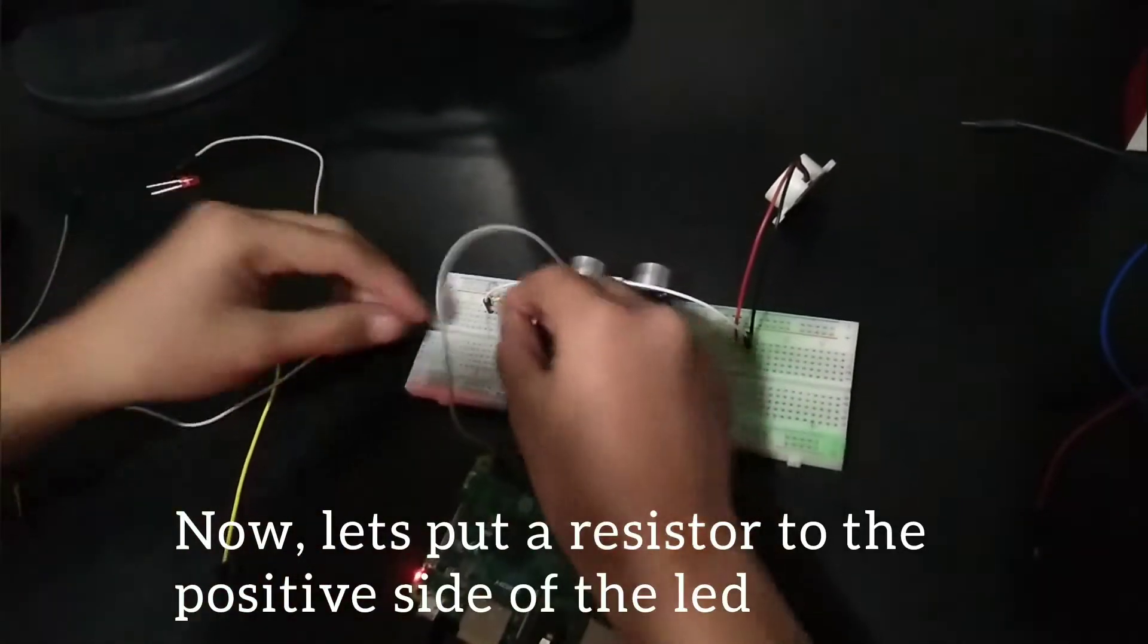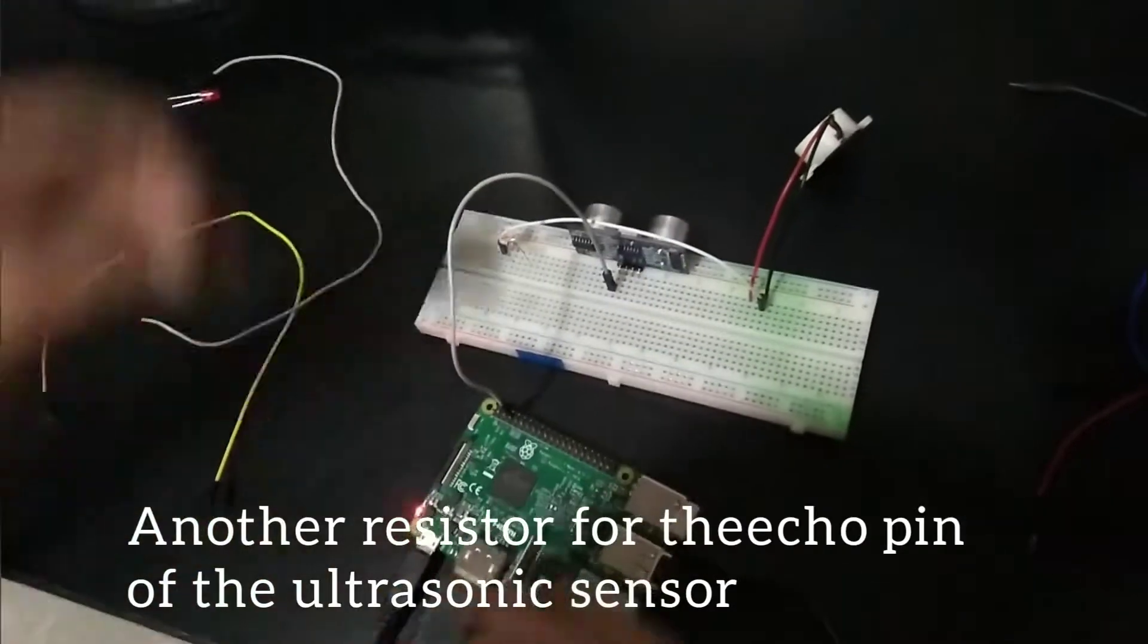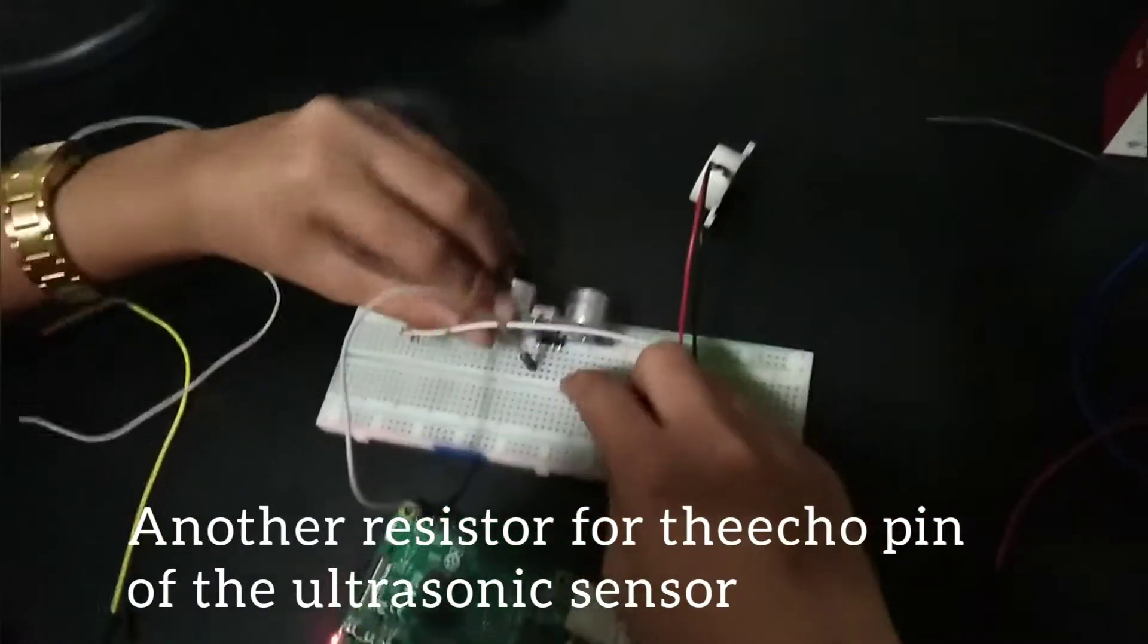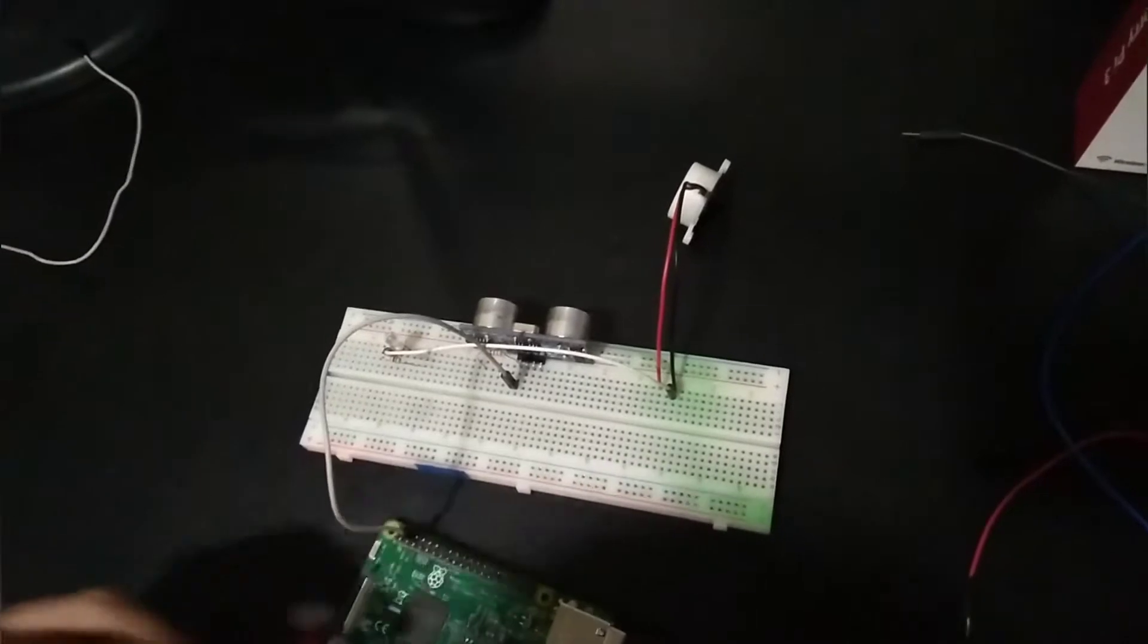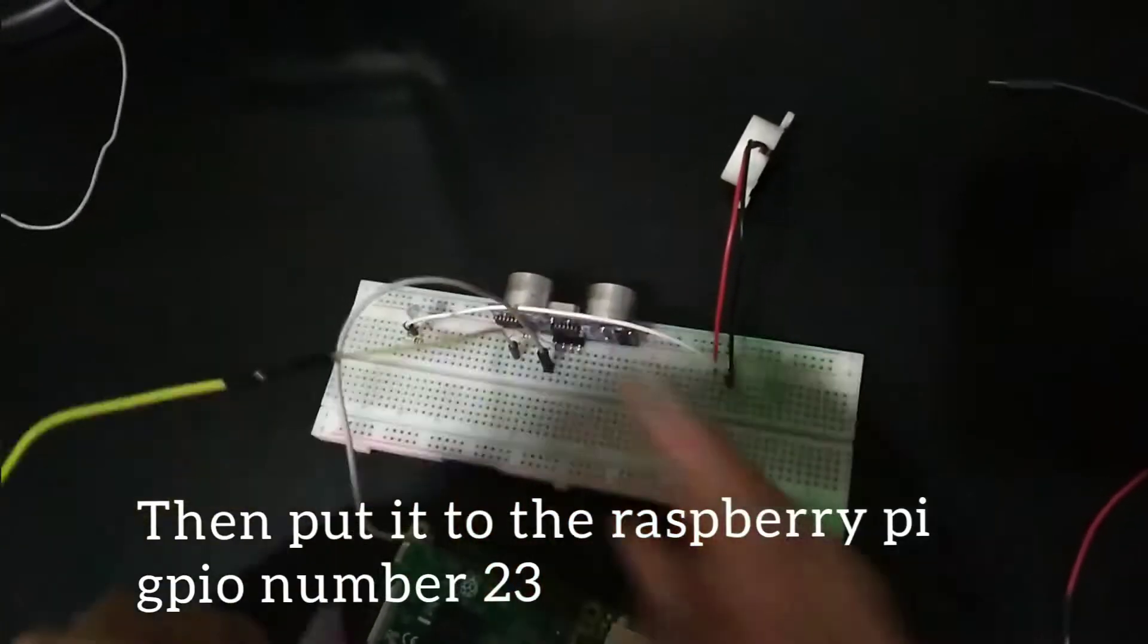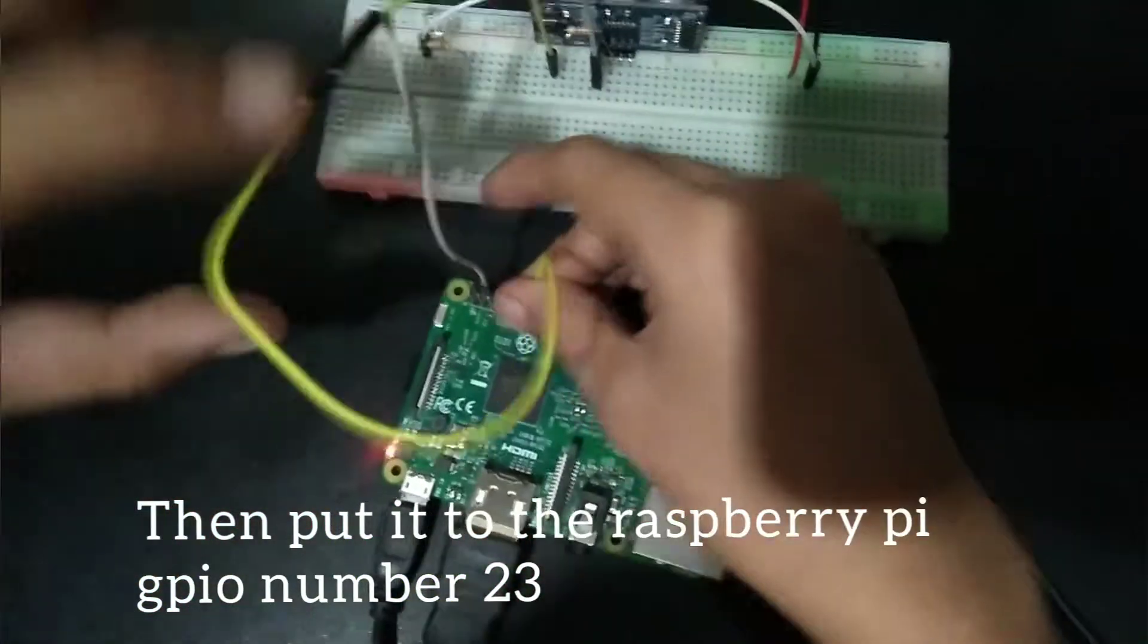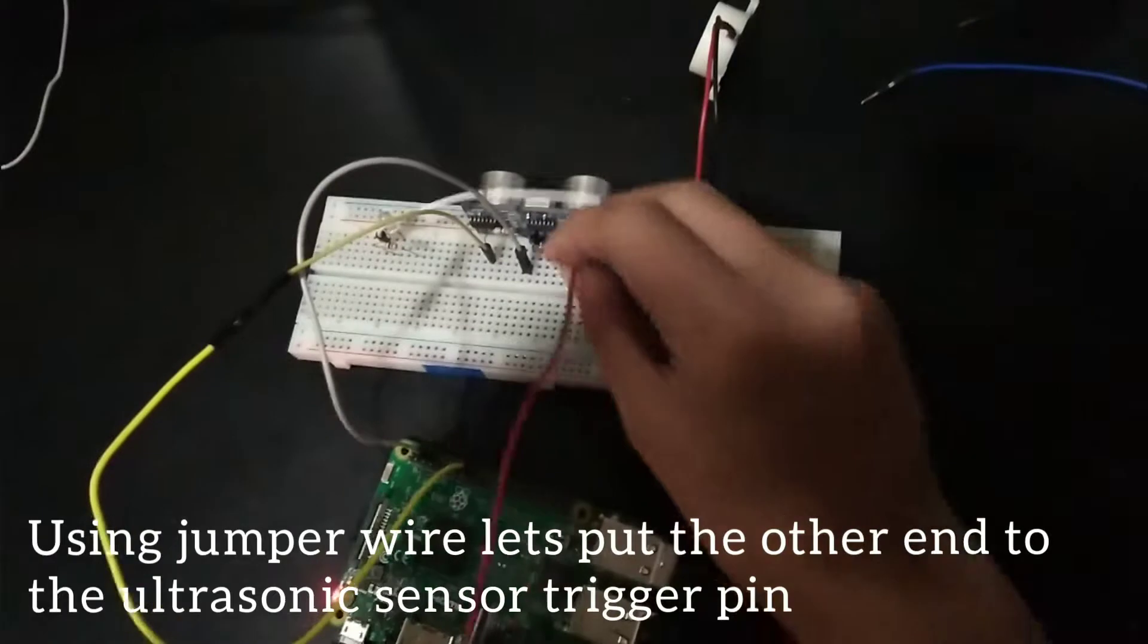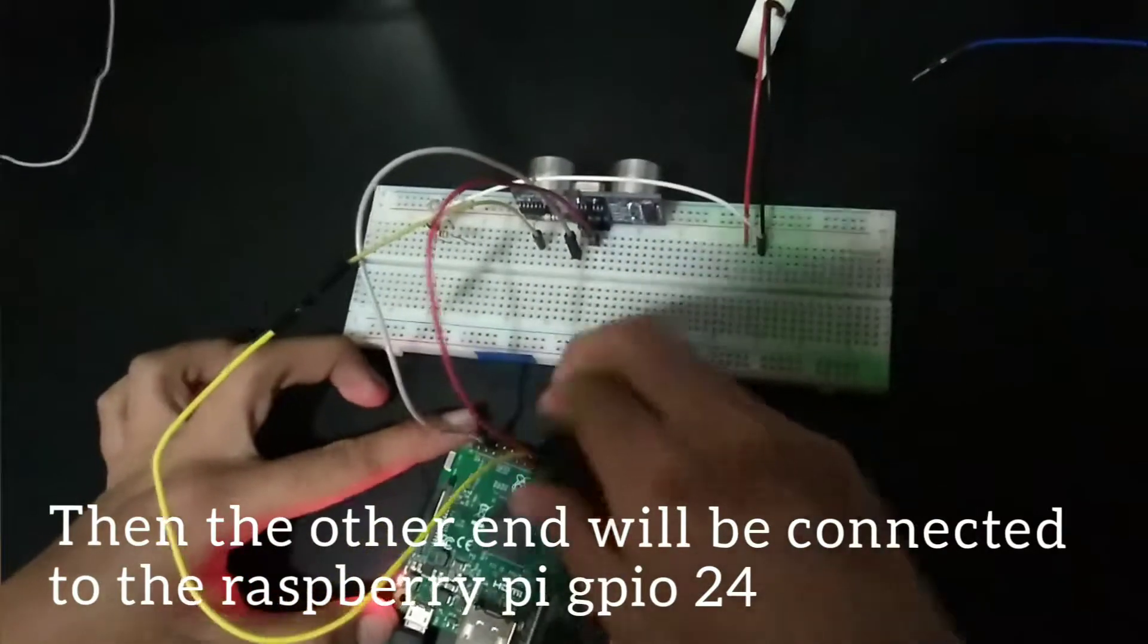For pin number 7, we input the echo sensor. The echo connects to pin number 23, pin number 23. Then the trigger connects to pin number 24 on the Raspberry Pi.